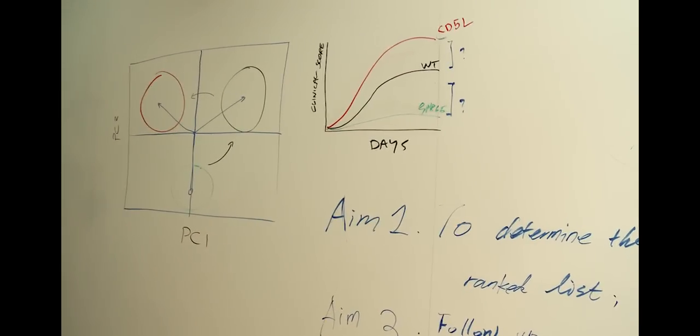What we already know from the literature is that CD5L is actually an inhibitor of a fatty acid synthesis pathway. What that means is it inhibits the making of lipids and fatty acids inside the cell.